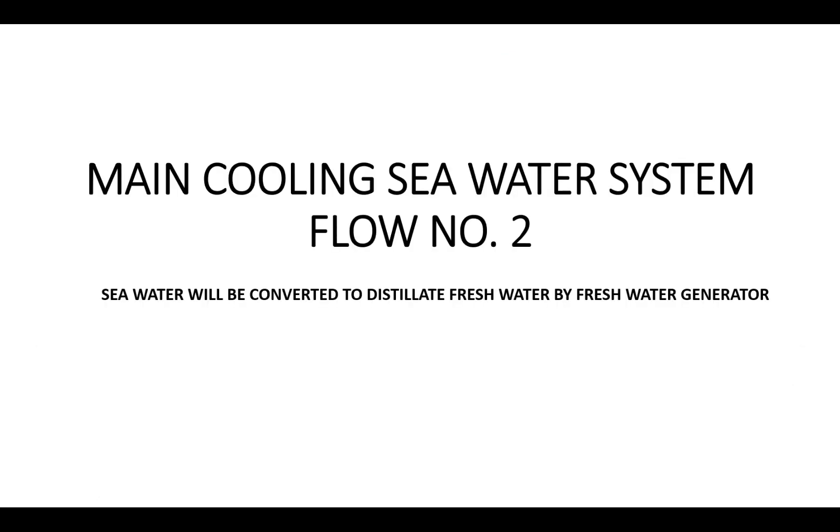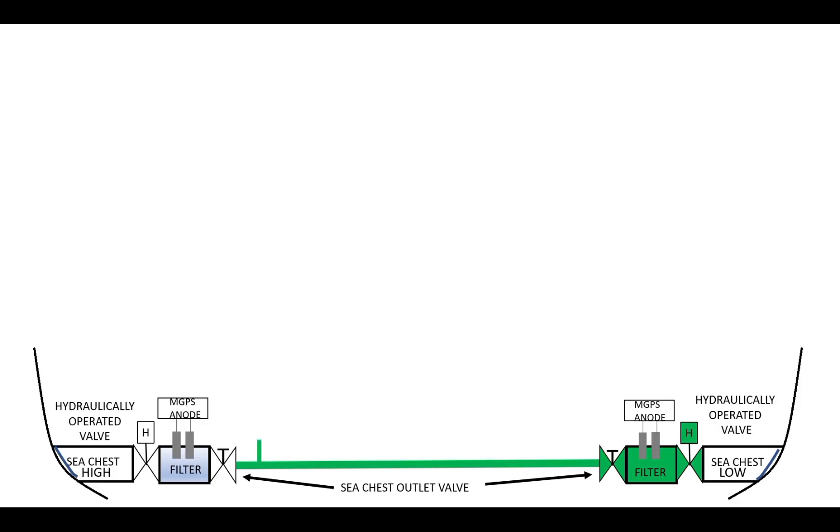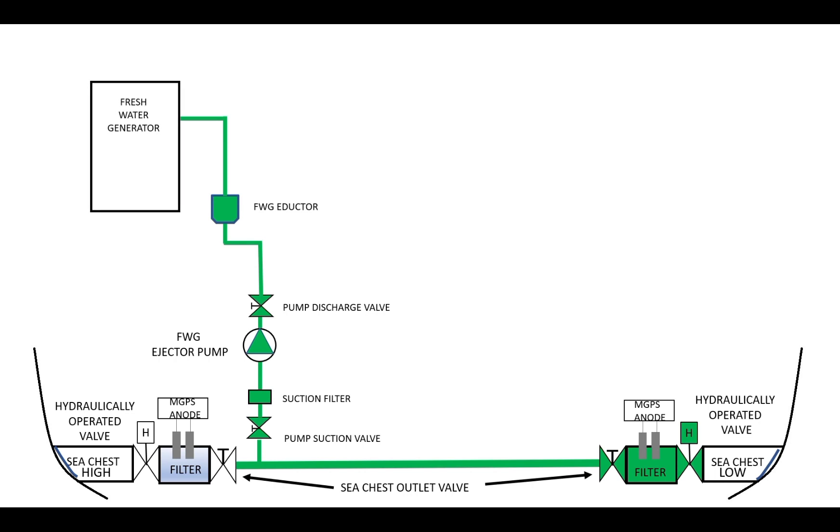Flow number two: sea water will be converted to distillate fresh water by fresh water generator. Pump suction valve, pump suction filter. The fresh water ejector pump transports water to the eductor and is introduced to the condenser tubes before discharging overboard.